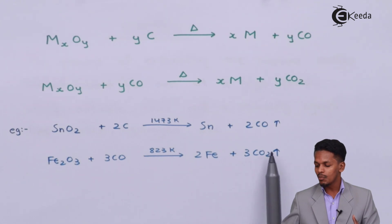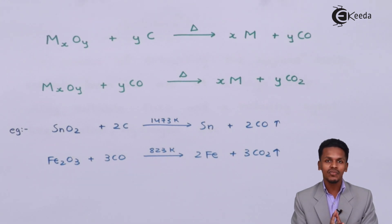The byproduct is three moles of CO2, and the temperature required is 823 Kelvin. This is the smelting process where we are converting a metal oxide to crude metal.